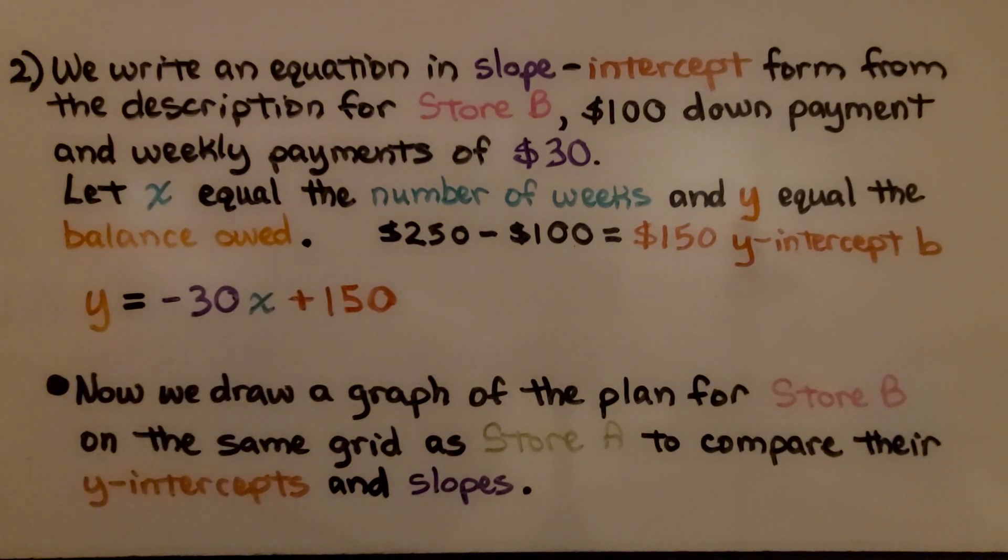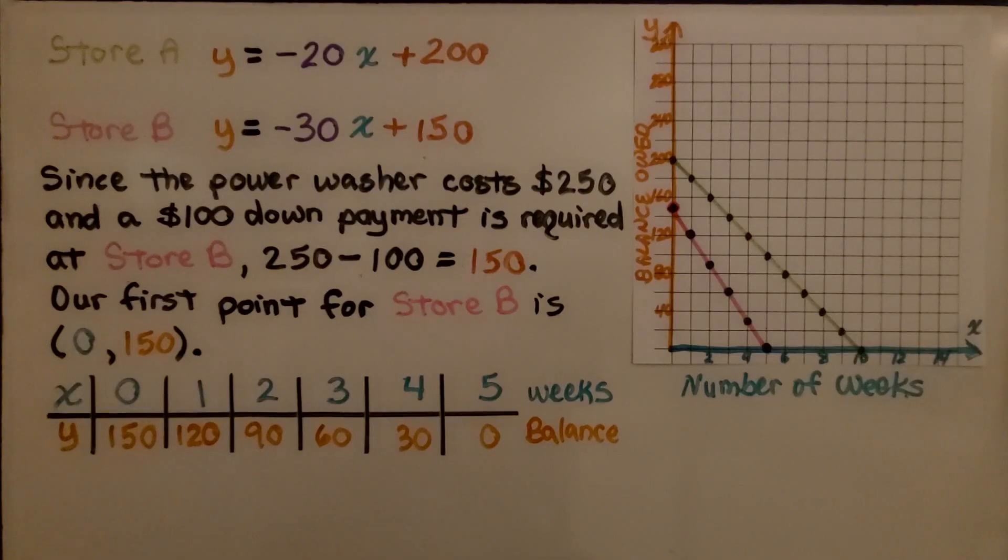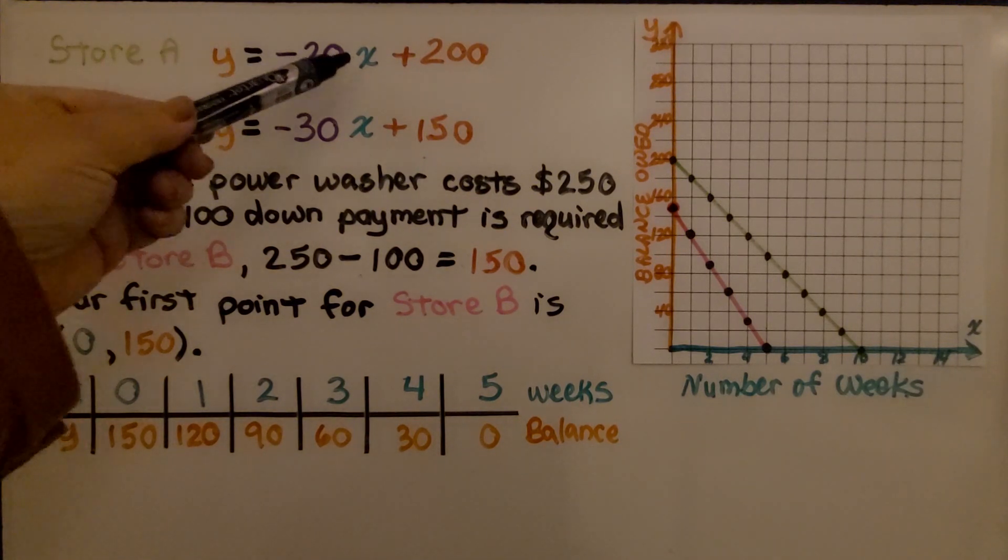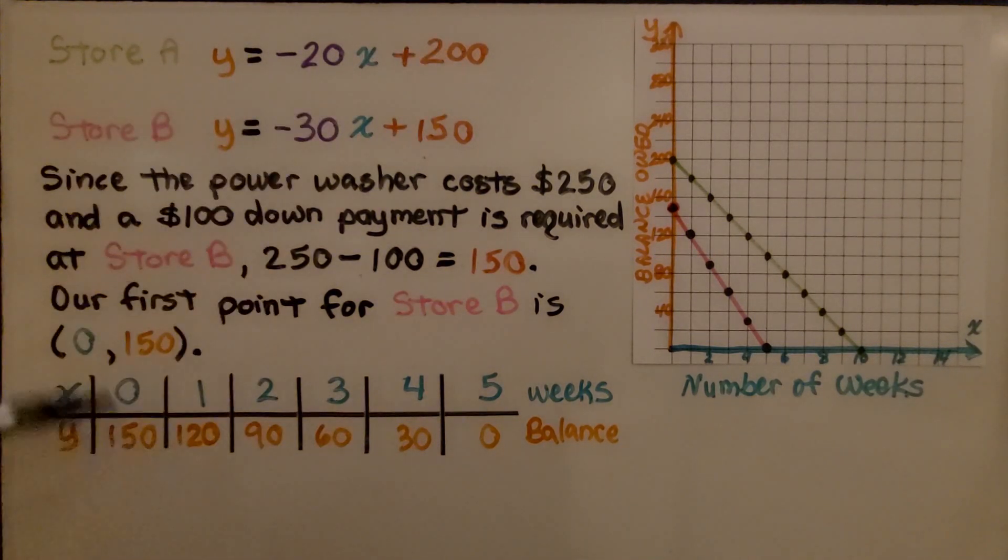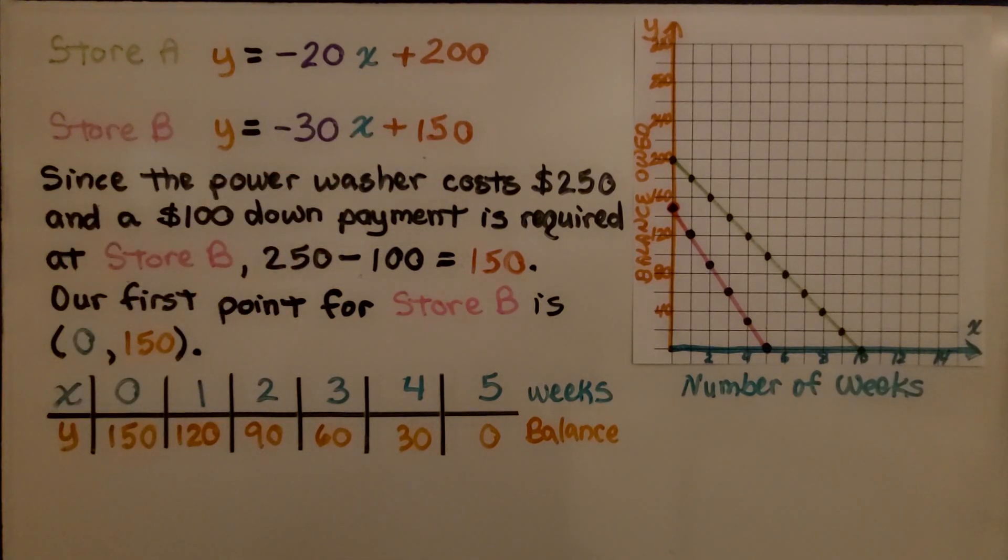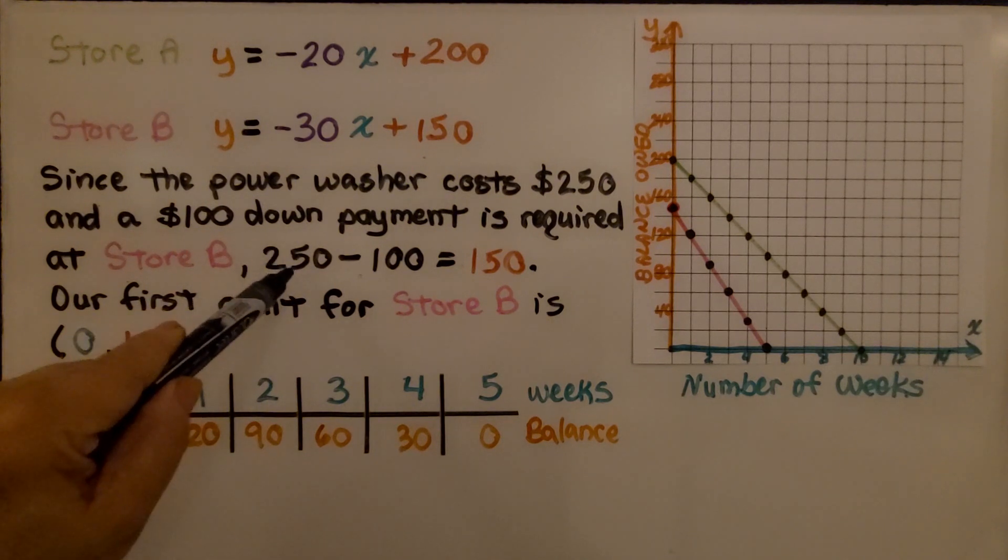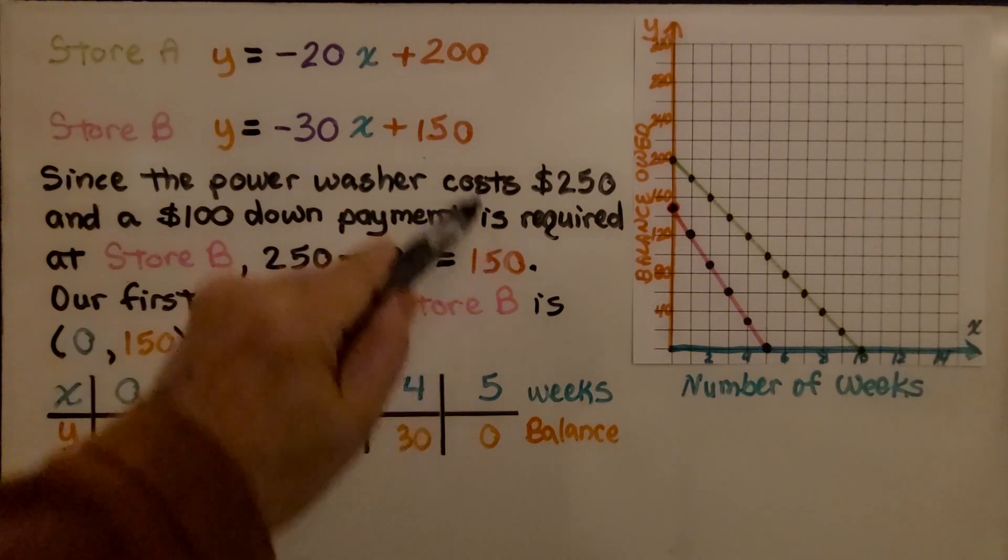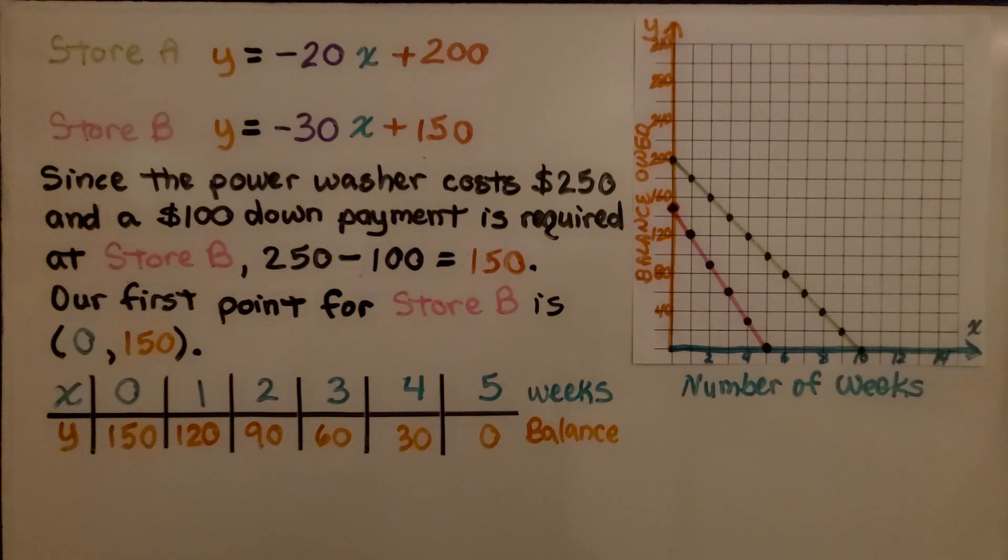Now we draw a graph of the plan for store B on the same grid as store A to compare the y-intercepts and slopes. Here we have our equations: Store A is y equals negative 20x plus $200, and Store B is y equals negative 30x plus $150. Since the power washer costs $250 and a $100 down payment is required at store B, $250 minus $100 equals $150. Our first point for store B is (0, 150).